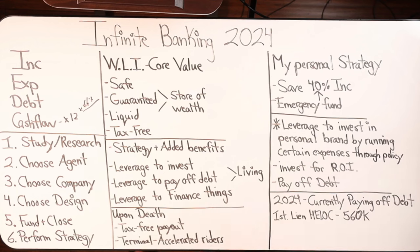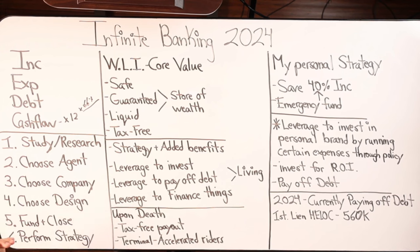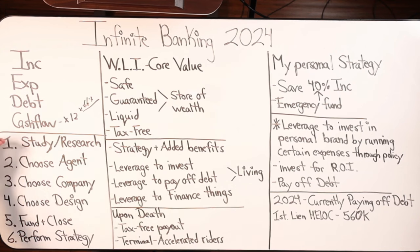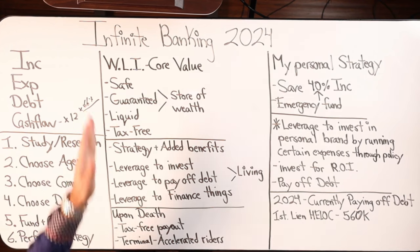Coming back to the whiteboard — six steps: study and research. Step two, choose the agent. Step three, choose the company. This is not in the best order, but these are critical things — for sure you're going to study and research. More than likely when you go through someone's funnel, you might end up talking to an agent, maybe prematurely, which is fine. You're just getting educated, and you want to set the standard.